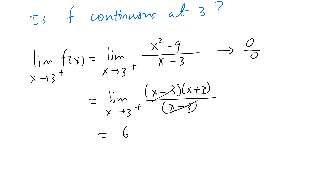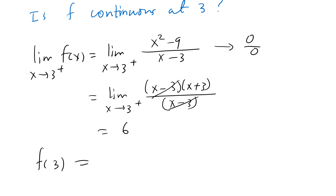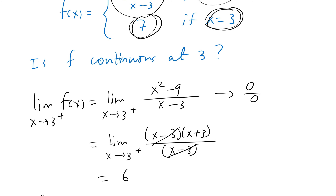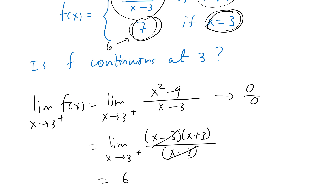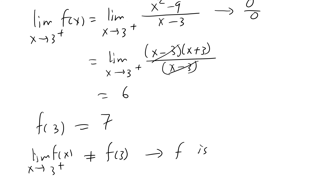The limit from the left side gives the same result of 6. Now we check f(3): when x = 3, f(3) = 7. All three conditions — limit from the right, limit from the left, and the function value at the point — must be equal. Since 6 ≠ 7, they are not the same. If it had been 6, the function would be continuous, but as stated f is discontinuous at x = 3.